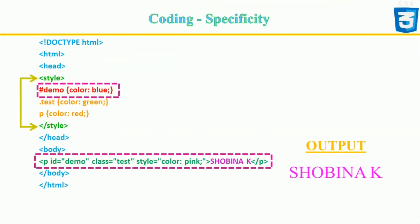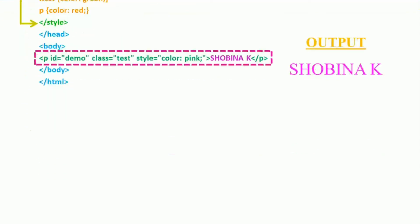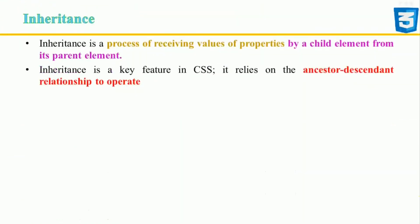Consider three code fragments: selector A has a specificity of 1 (one element selector); selector B has a specificity of 101 (one element selector and one ID); selector C has a specificity of 1000 (inline styling). Since rule C has the highest specificity, that style declaration will be applied. The text will be pink because the inline style sheet is given the highest priority.